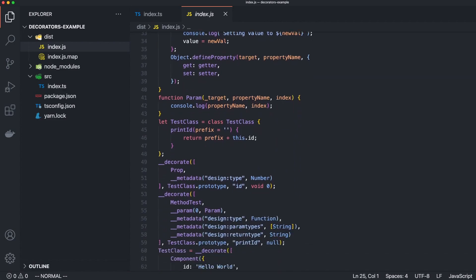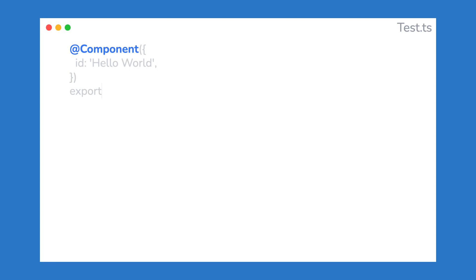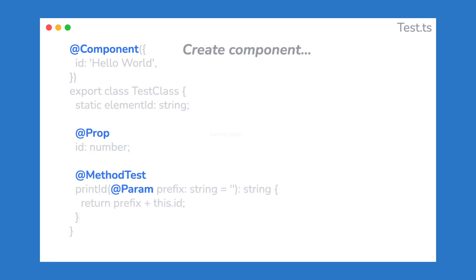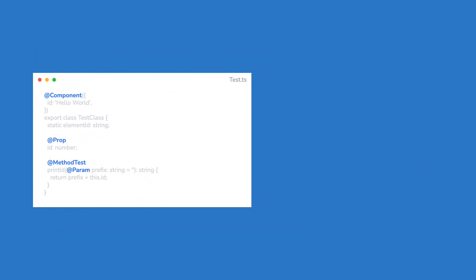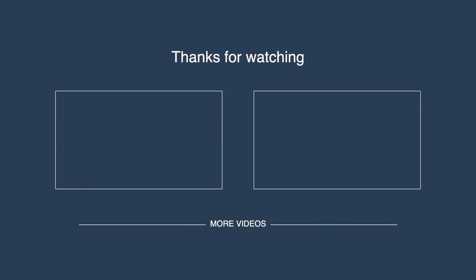That is about it for all our decorators. There are different use cases for decorators. A popular example would be to use decorators for logging — I've already demonstrated a small example using the property decorator. Other use cases could be caching, monitoring, business rules, or simple data validation. These things aren't really hard to understand, but personally I've never really had to implement them myself. It is just syntactical sugar for the users of your library. If you want another practical example, feel free to post it in the comments and I will make an extra video about it. If you have any questions, feel free to ask them in the comments. Thanks for watching and I will see you in the next video.